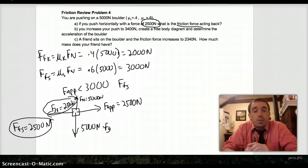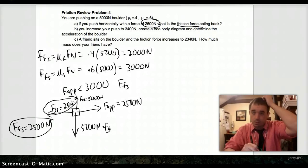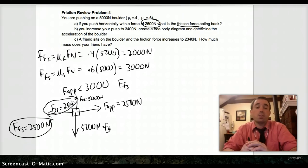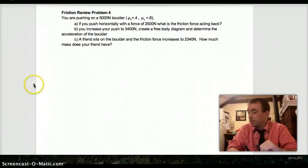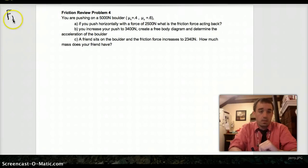All right. Next thing, if you increase your push to 3,400 Newtons, create a free body diagram and determine the acceleration of the boulder. So, we had the static friction force. Put that up here. Static friction was 3,000 Newtons. That's the maximum.